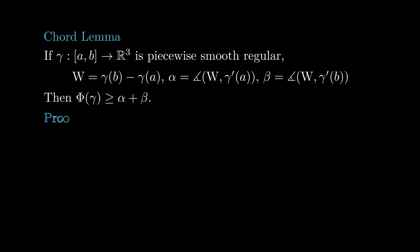A consequence of Fenchel theorem is what we call the corollary lemma. It says that if a space curve gamma is smooth regular with distinct endpoints, we let w be the vector that goes from the initial point to the end point, alpha the angle that w makes with initial velocity, and beta the angle that w makes with the final velocity, then the total curvature of gamma is at least alpha plus beta.